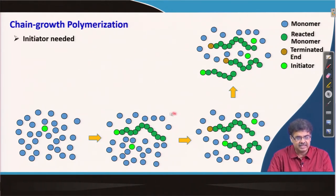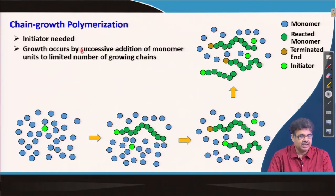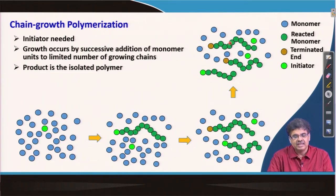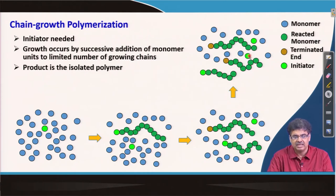Looking at the characteristics of chain growth polymerization: we need an initiator, otherwise the chain cannot start. The growth of the polymer chain occurs by successive addition of monomer units to a limited number of growing chains. The final isolated product is the polymer chains. Monomers, unreacted initiator, or small molecular chains are not part of the polymer product — the product is the isolated polymer molecules.